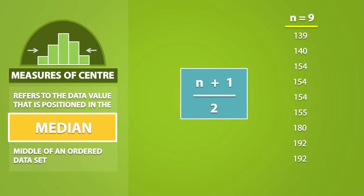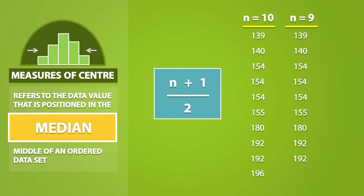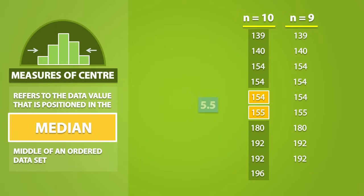When we have an odd amount of data values, the median will always be apparent. However, if n is an even number, we see that we have two middle data points. And if we use the formula, we end up with 5.5.